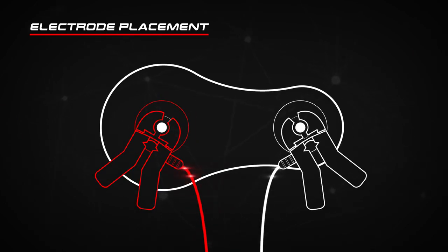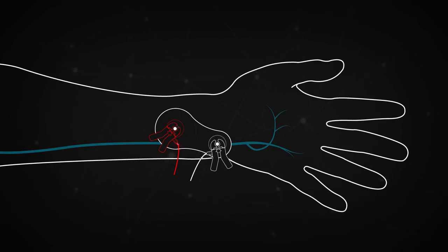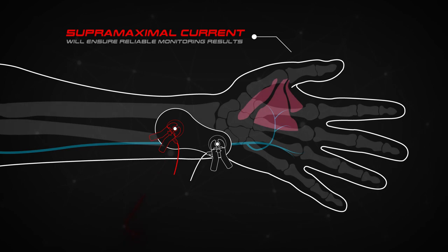Electrode placement. As previously explained in our supramaximal stimulation video, the placement of the stimulating electrodes is critical in achieving a supramaximal current for the purpose of ensuring reliable monitoring results.